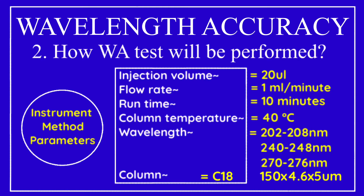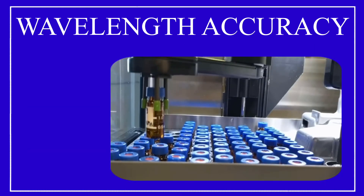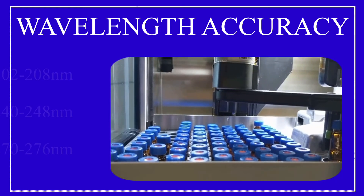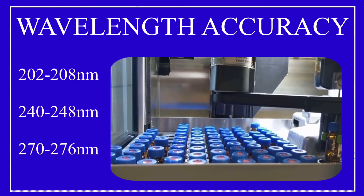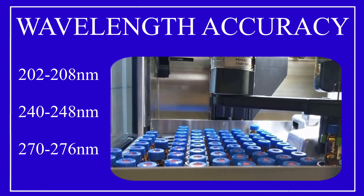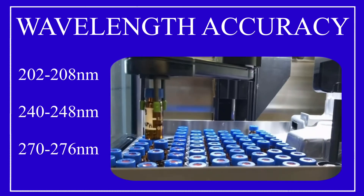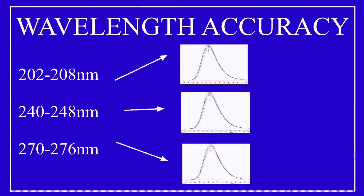After applying these instrument method parameters, the HPLC is equilibrated with mobile phase. Once the HPLC system is stabilized, the 25 ppm caffeine standard solution is injected into the HPLC system using these three different sets of wavelengths. The data generated from these three different wavelength sets is then evaluated to check whether the wavelength accuracy test is passed or failed.